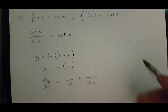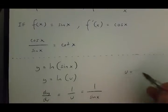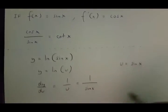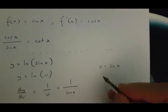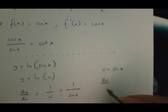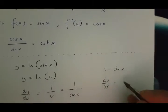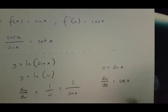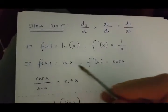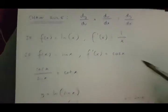Alright. Now, if u is equal to sin x, then du over dx is going to be equal to cos x. And this is because of this rule over here.